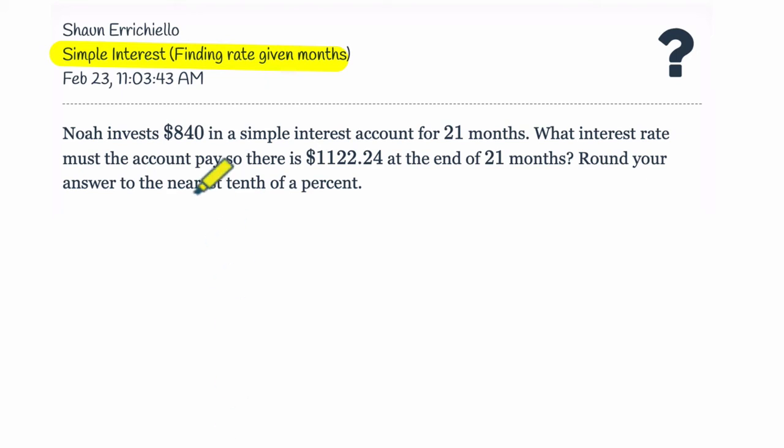Alright, so Noah invests how much? $840. So we know right away that P is $840. I'm going to leave out that dollar sign and just write 840. That's our principal amount. Alright, $840. There we go.